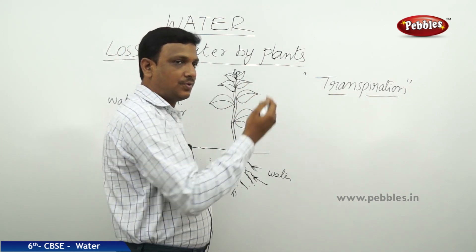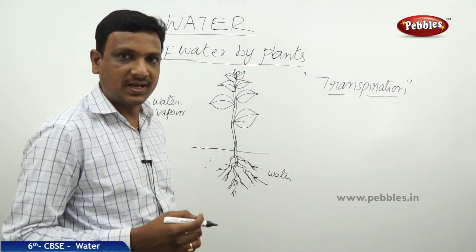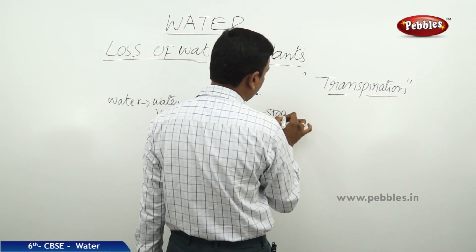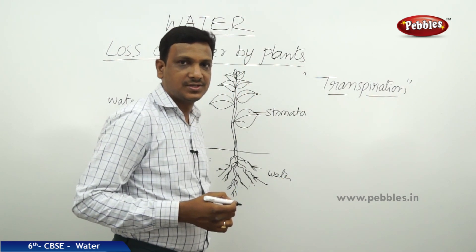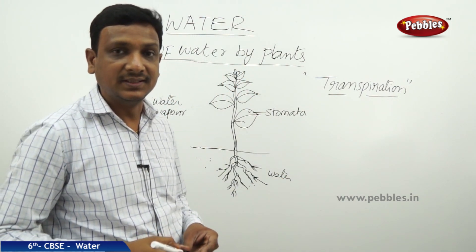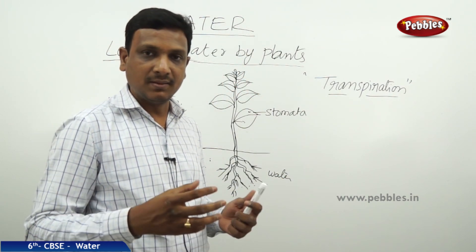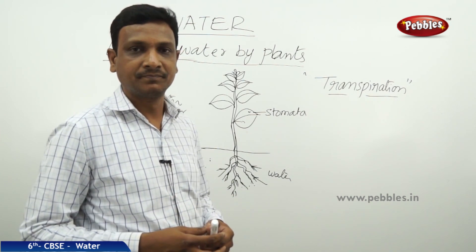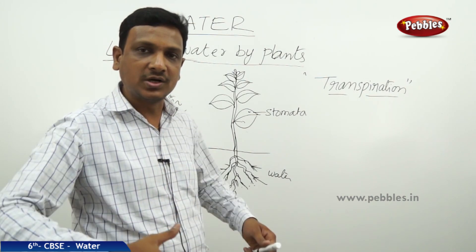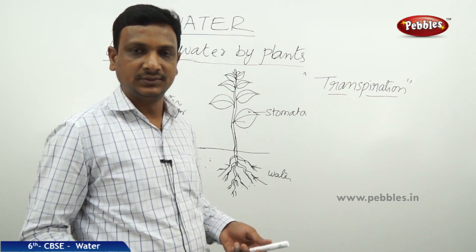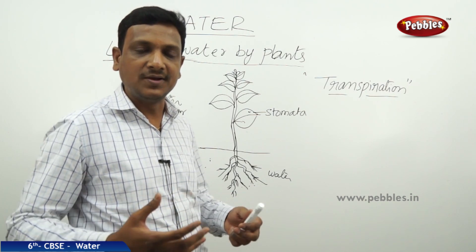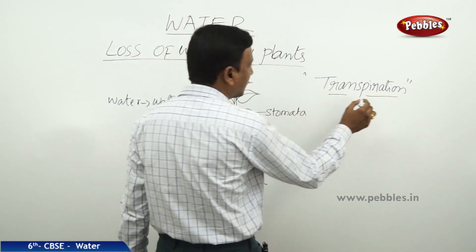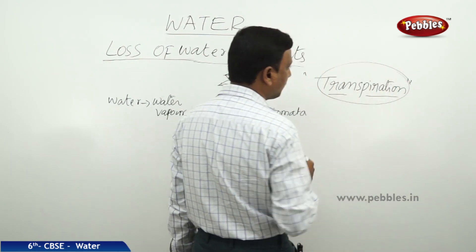The leaves, when they are exposed to sunlight — the leaves of a plant consist of tiny holes called stomata, through which the plant releases water vapour. The plant releases water out in the form of water vapour; it loses the water. The sunlight makes the plant lose water in the form of water vapour, and this process is called transpiration, carried out by plants and trees.